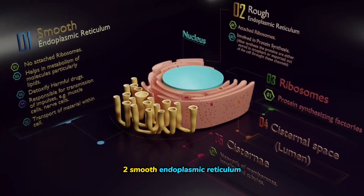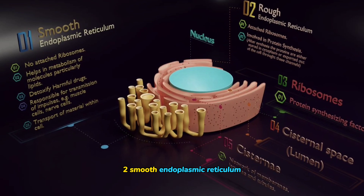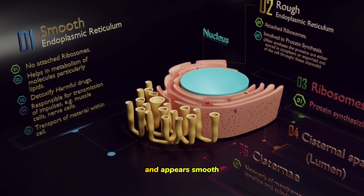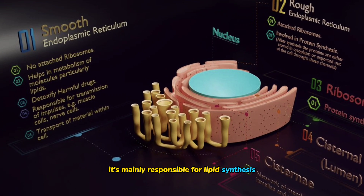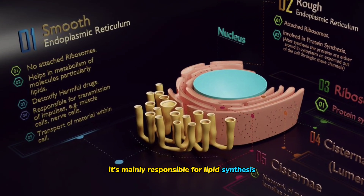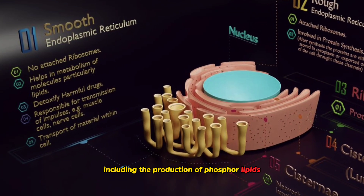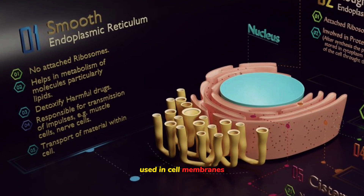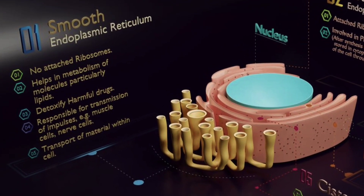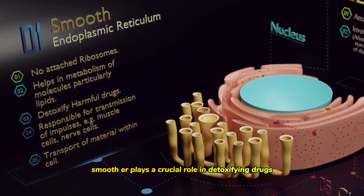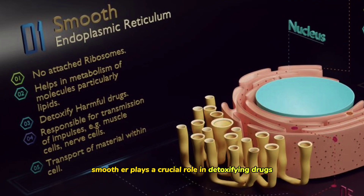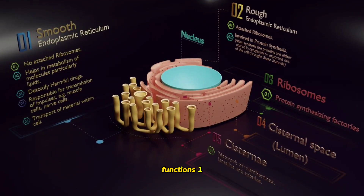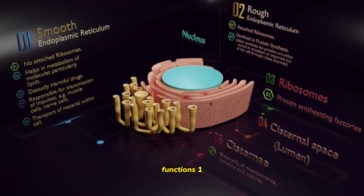The smooth endoplasmic reticulum lacks ribosomes and appears smooth. It's mainly responsible for lipid synthesis, including the production of phospholipids used in cell membranes. Additionally, smooth ER plays a crucial role in detoxifying drugs and chemicals in the liver.